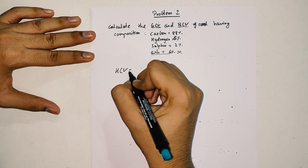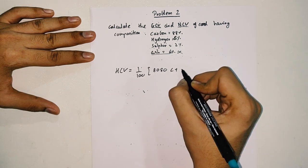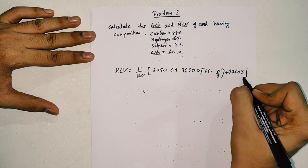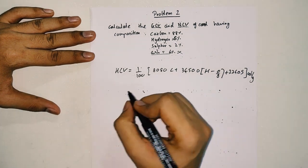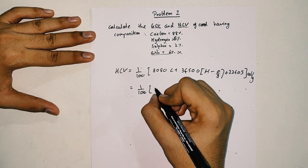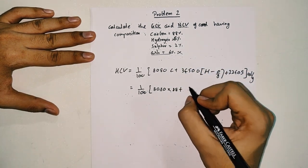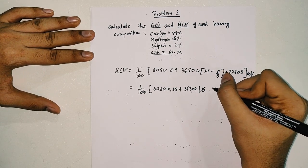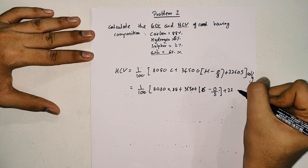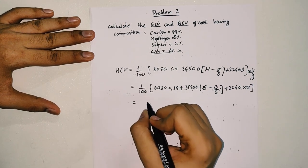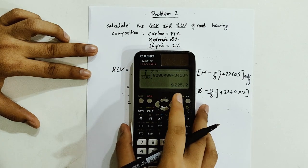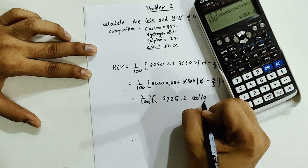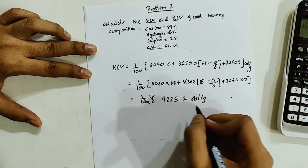Problem 2: Find HCV and LCV. Using Dulong's formula: HCV = (1/100) × [8080 × 88 + 34500 × (6 − 0/8) + 2240 × 2]. Solving on the calculator gives HCV = 9225.2 cal/gram.